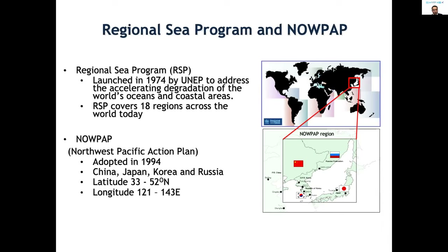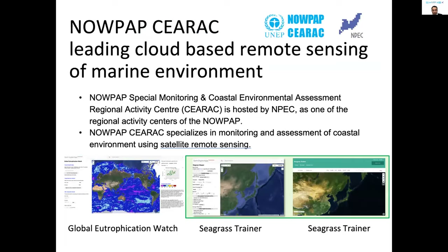China, Japan, Korea, and Russia are the member states of this program. The map on the right bottom corner shows the geographical coverage of the NOWPAP region. Our seas are surrounded by four countries, and North Korea too. In this region, there are four Regional Activity Centers located in each country. NOWPAP SEALARC is one of the Regional Activity Centers, and we specialize in monitoring and assessment of coastal environment using satellite remote sensing.